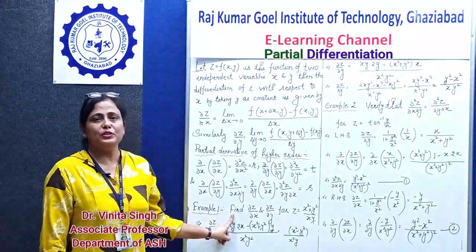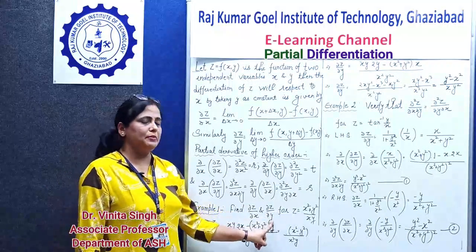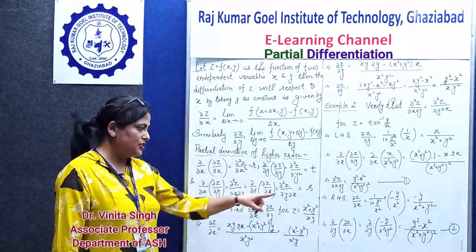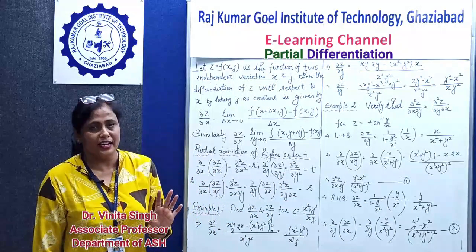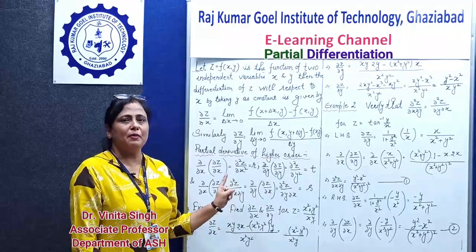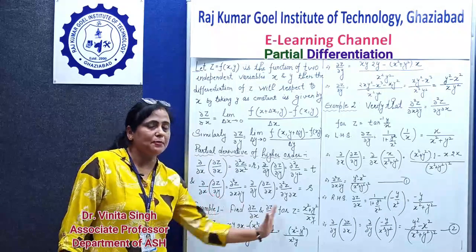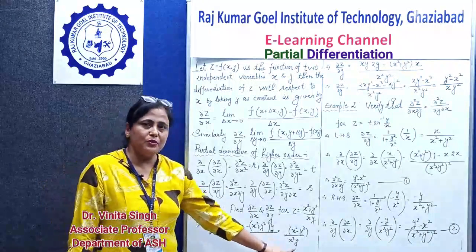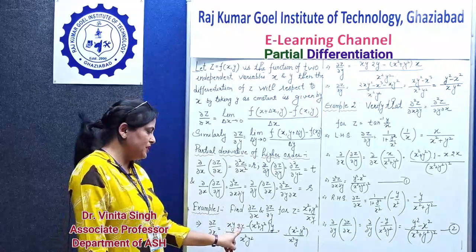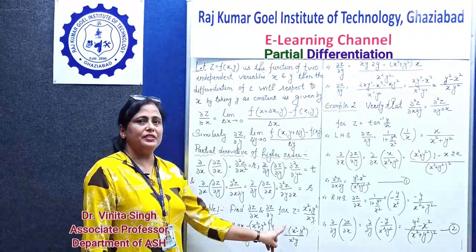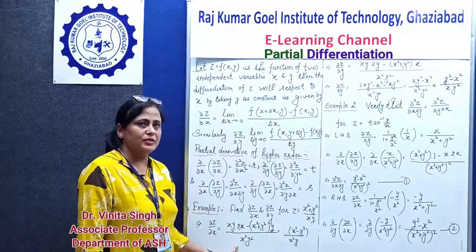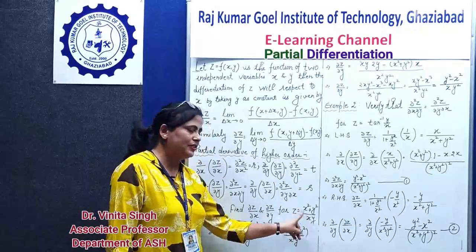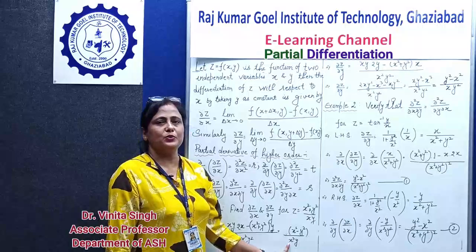We will work one example for first order derivatives: finding ∂z/∂x and ∂z/∂y, where z = (x² + y²) / (xy). All formulae from ordinary differentiation apply in partial differentiation; the rules and regulations are the same, but the steps are slightly different. For ∂z/∂x, apply the quotient rule: denominator as-is times differentiation of numerator, minus numerator as-is times differentiation of denominator, all divided by denominator squared.